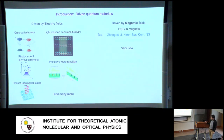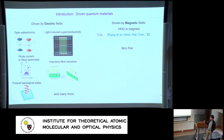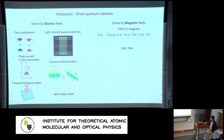If we try to categorize those driven quantum states, we notice something very interesting: most of those driven systems are driven by electric fields E, and there are very few examples of systems driven by magnetic fields, or time-varying magnetic fields. One interesting example is some high-harmonic generation experiments in magnets, but compared to the list of electrically driven systems, it's very, very few.